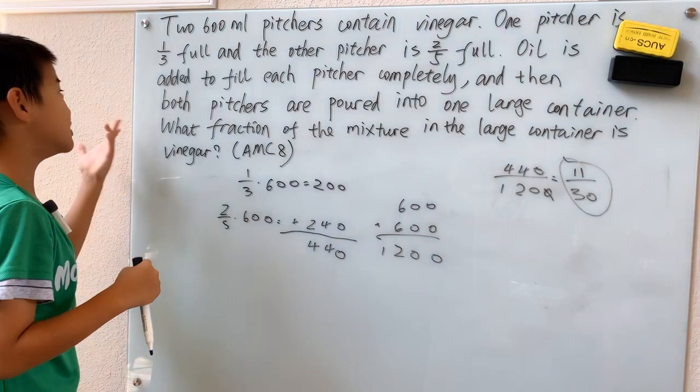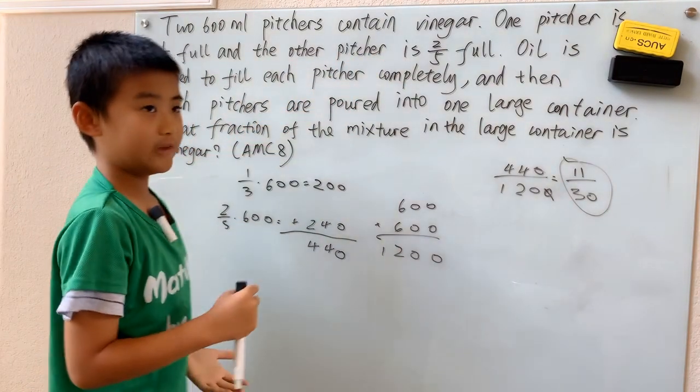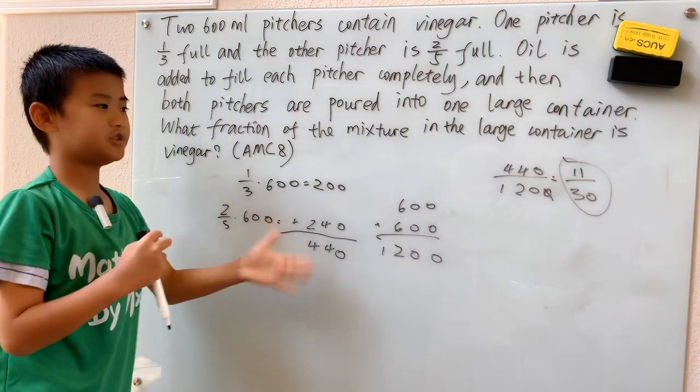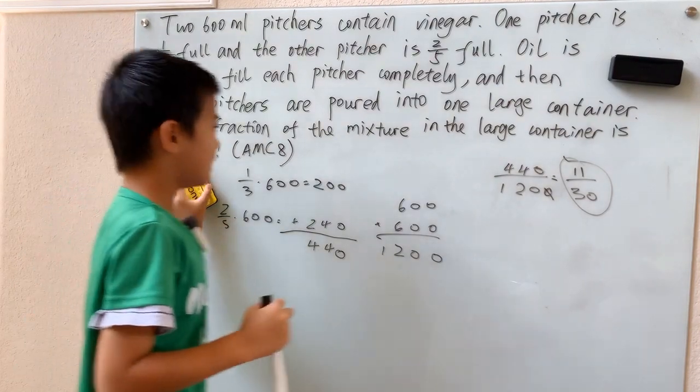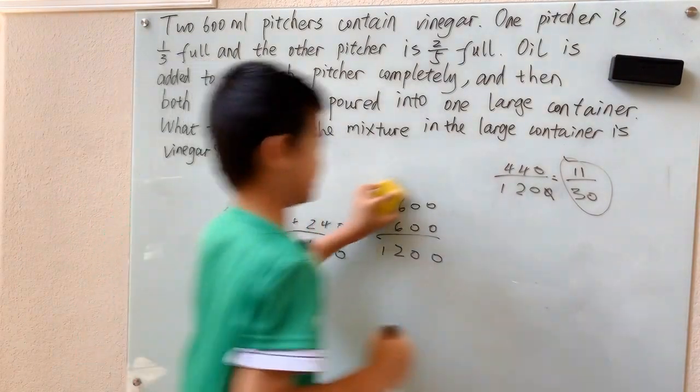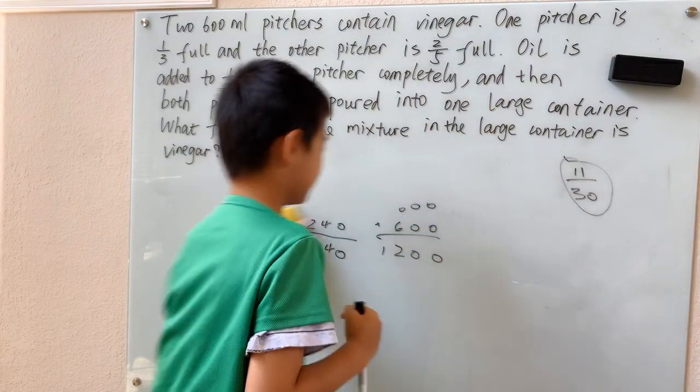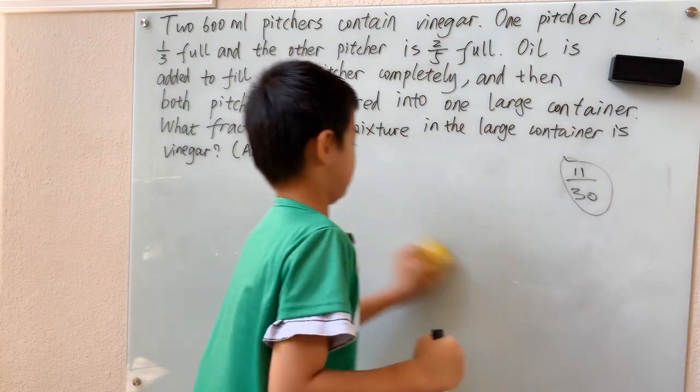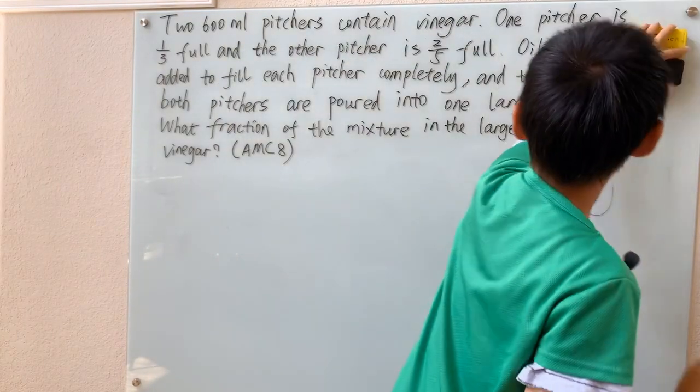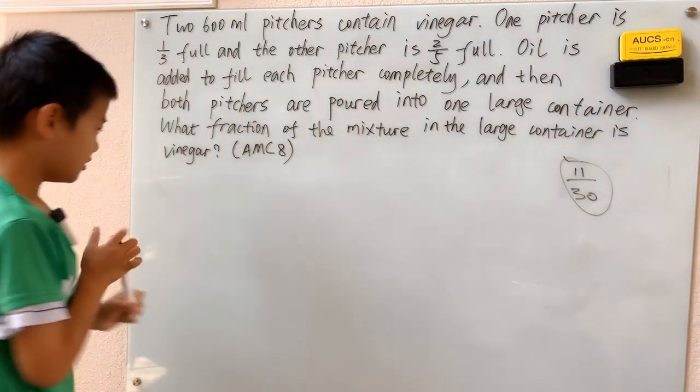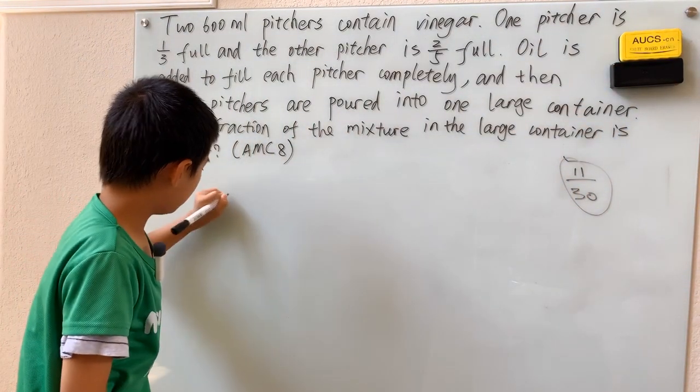Now it's not like we can just add one third and two fifths to get them. Large container. So I'm going to draw a picture, since I think a lot better in pictures than I do in words. We have one pitcher. It's our first pitcher.